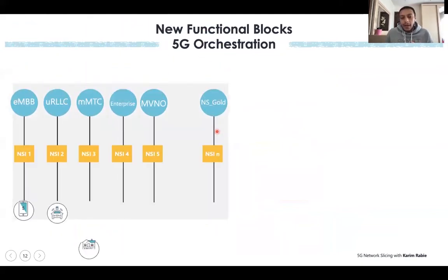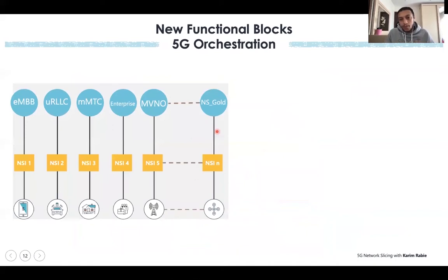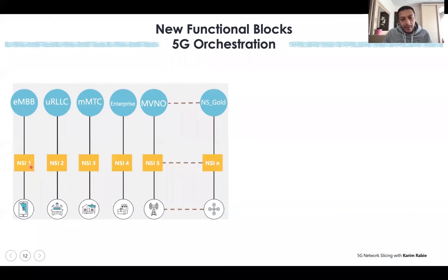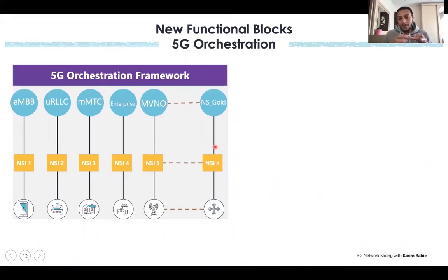With slices, the number of slices can go exponentially high. From a standards perspective, you can go to 2 to the power of 32 slices leased by the network. Any CSP can theoretically lease and dynamically govern 2 to the power of 32 slices — a slice for eMBB, a slice for machine type communication, a slice for enterprise, a slice for MVNO. So there is a must to have an orchestration framework, because you will never be able to scale and efficiently manage the lifecycle of these dynamic slices without one.